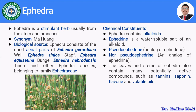Moving towards the chemical constituents of ephedra: ephedra mainly contains alkaloids, the main one being ephedrine, which is a water-soluble salt. Furthermore, the analog of ephedrine — pseudoephedrine and nor-pseudoephedrine — are also present. The leaves and stems also contain potentially active compounds such as tannins, saponins, and flavones.